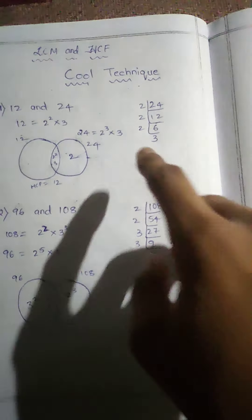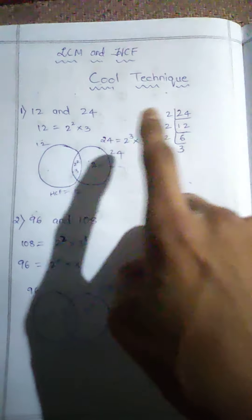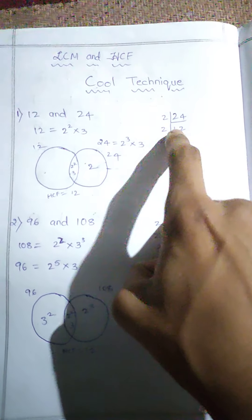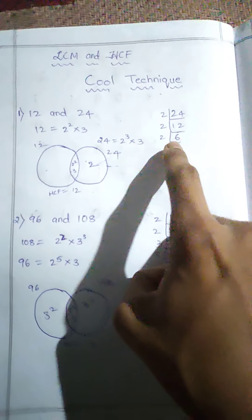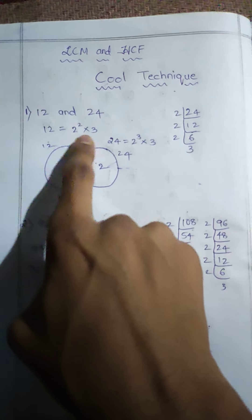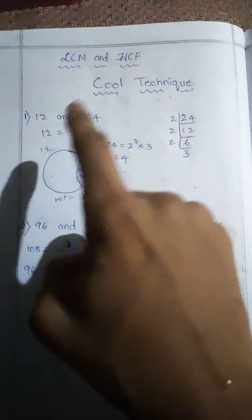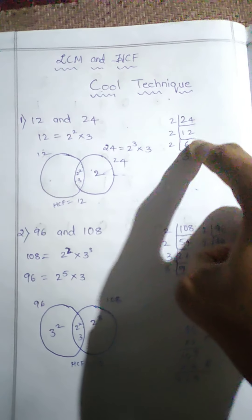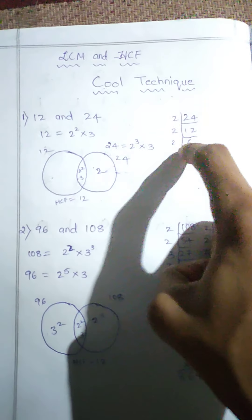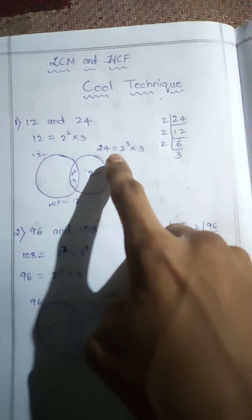Prime factorize both numbers. First take 24: 24 divided by 2 is 12, 12 divided by 2 is 6, 6 divided by 2 is 3. Next take 12: 12 divided by 2 is 6, 6 divided by 2 is 3. We get 2 squared times 3.